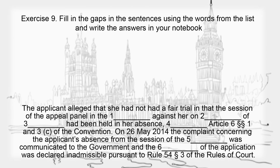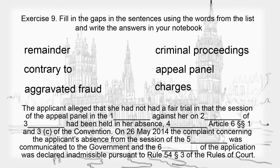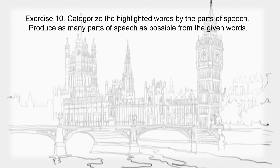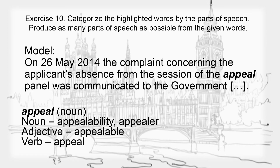Fill in the gaps in the sentences using the words from the list and write the answers in your notebook. Categorize the highlighted words by the parts of speech. Produce as many parts of speech as possible from the given words. Here's a model for you: On May 26, 2014, the complaint concerning the applicant's absence from the session of the appeal panel was communicated to the government. The highlighted word is 'appeal', which is a noun.